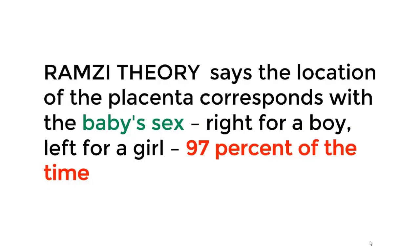So the Ramsey theory says that the location of the placenta corresponds with the baby's sex: right for a boy, left for a girl, 97% of the time.